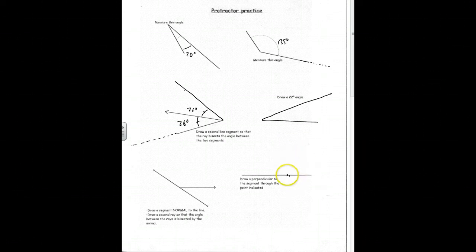Again, protractor not playing nicely with the screen because it's made of metal. Okay, now we want to draw a segment normal to the line, which would be... normal is another word for perpendicular, so I'm going to use my protractor here to draw that normal.